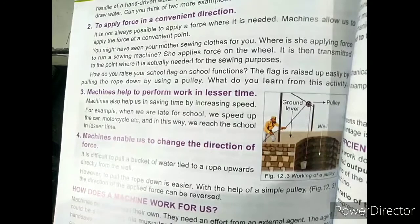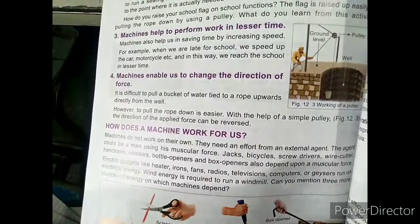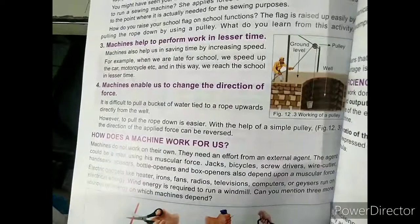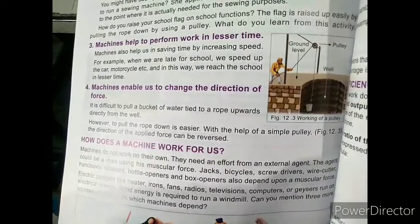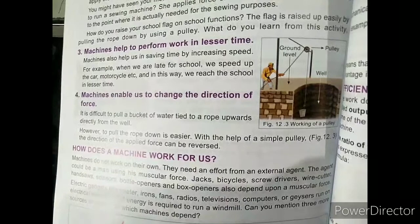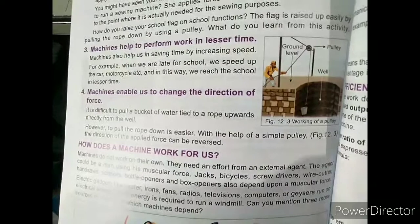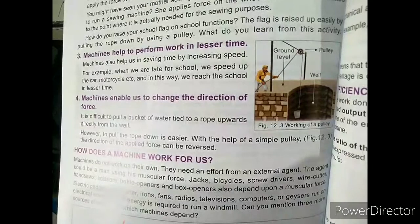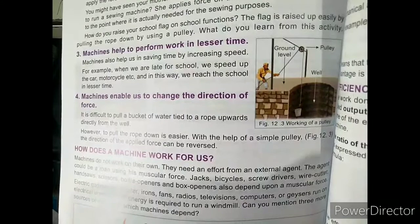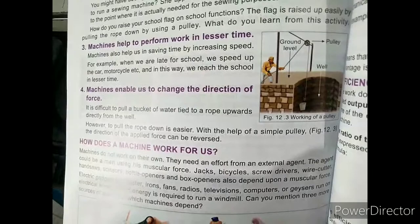Next, machines enable us to change the direction of the force. If you want to change the direction in which force is being applied, a machine is used for that purpose. It is difficult to pull a bucket of water tied to a rope upward directly from a well; however, pulling the rope down is easier with the help of a simple pulley. The direction of the applied force can be reversed — the pulley changes the direction and brings water from below to above.